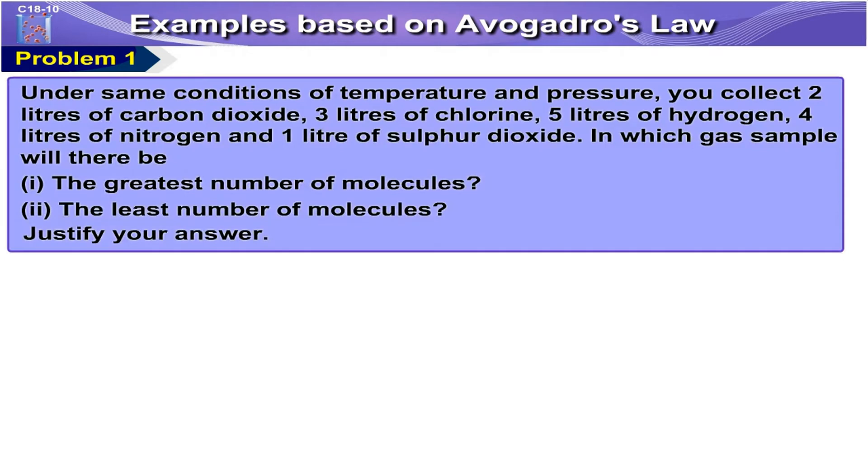Examples Based on Avogadro's Law. Example number 8: Under same conditions of temperature and pressure, you collect two liters of carbon dioxide, three liters of chlorine, five liters of hydrogen, four liters of nitrogen, and one liter of sulfur dioxide. In which gas sample will there be: Number 1, The greatest number of molecules? Number 2, The least number of molecules? Justify your answer.